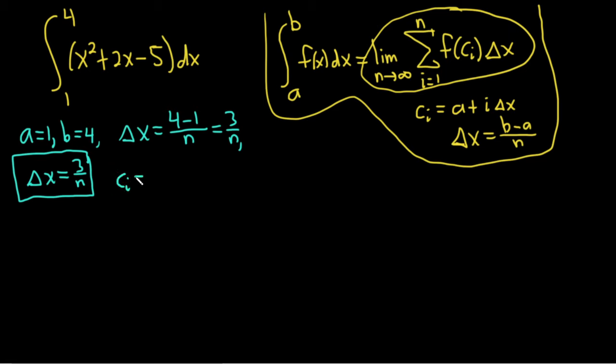And then c_i is a plus i Δx. So a is 1 plus i. And then Δx was 3 over n. And that looks really funny. So I'm just going to write it like this, c_i is equal to 1 plus 3i over n. And just again, just to add some clarity and to keep me from going way too fast, we have c_i equals 1 plus 3i over n.